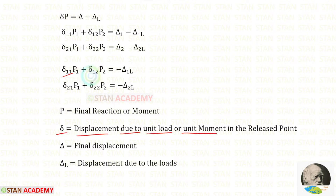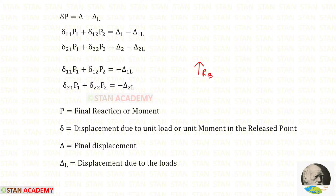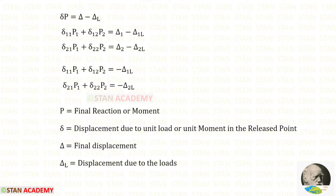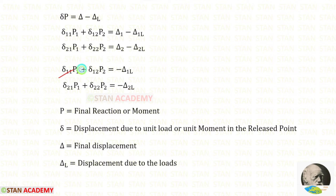Here we have Delta 11, Delta 12, Delta 21, and Delta 22, which are displacements due to unit load or unit moment. Since the first coordinate is the vertical reaction RB, the displacements Delta 11, Delta 21, and Delta 1L will be deflections. Since the second coordinate is the moment MB, Delta 12, Delta 22, and Delta 2L will be slopes. All displacements are evaluated at point B.